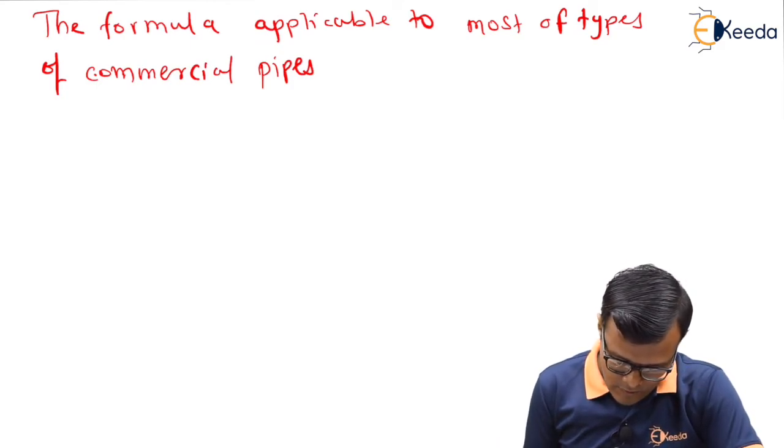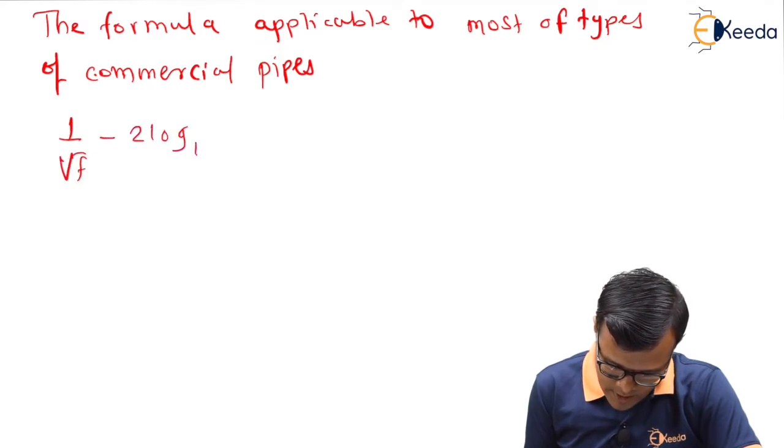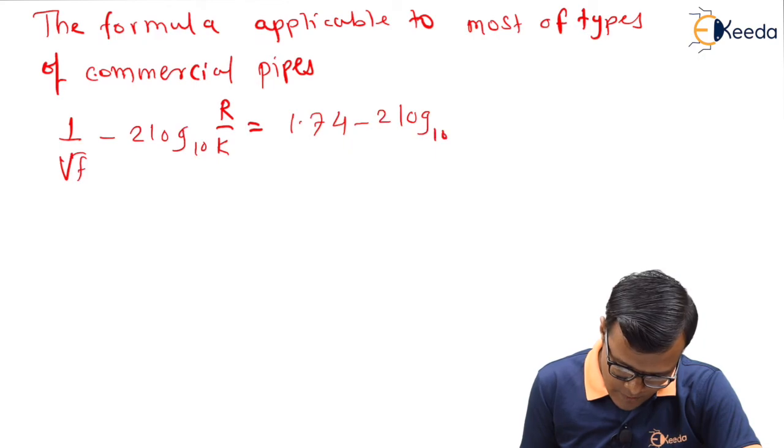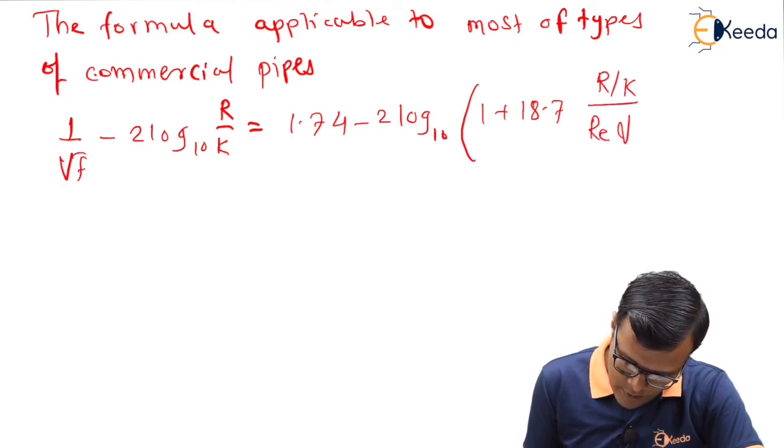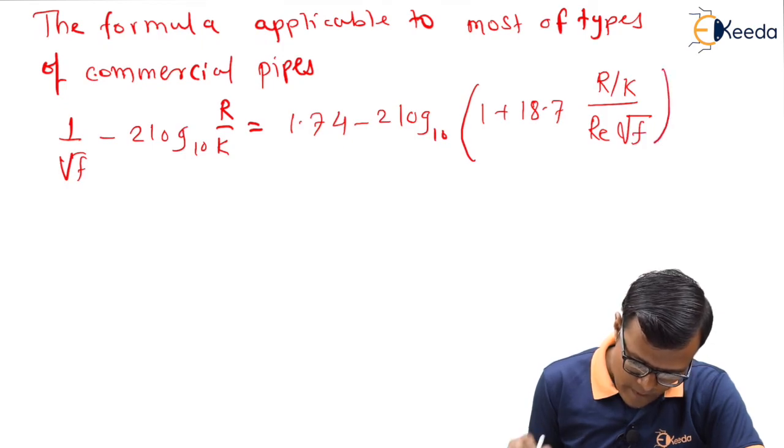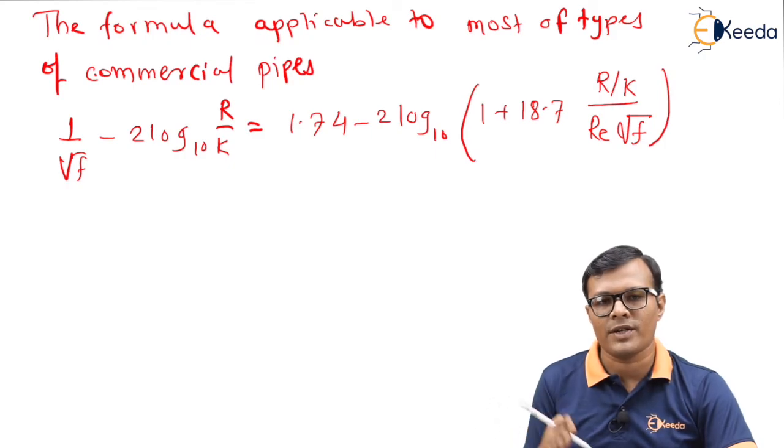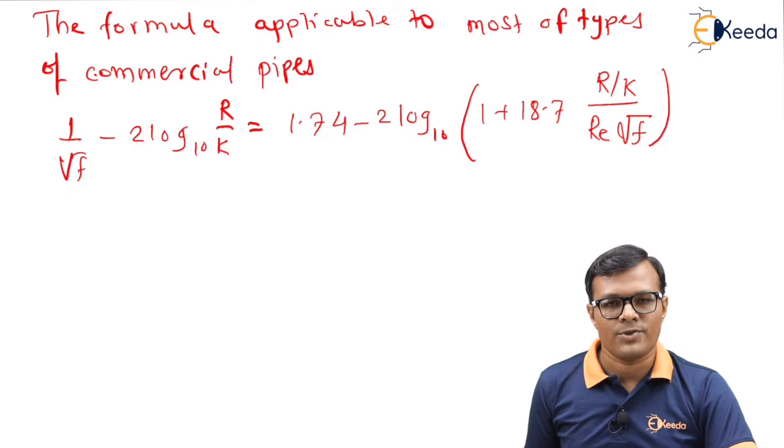And the relation is 1 upon root f minus 2 log to the base 10 R upon K, that is equal to 1.74 minus 2 log to the base 10 in bracket 1 plus 18.7 R upon K divided by Re under root f. So this relation is used to calculate the value of friction factor in case of most of the types of commercial pipes. That's all, thank you.